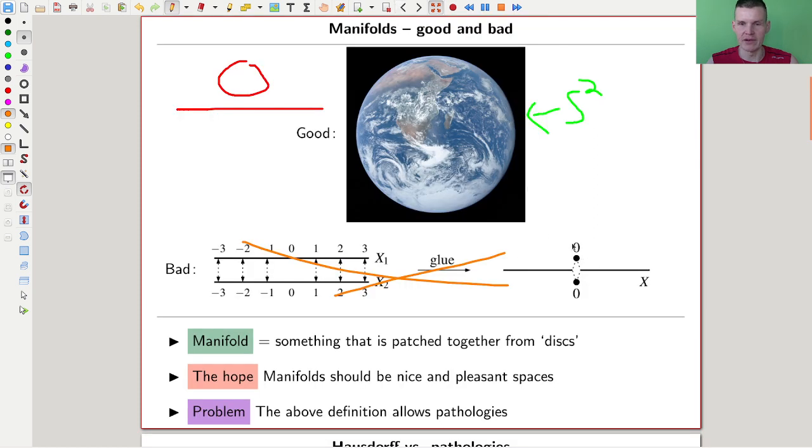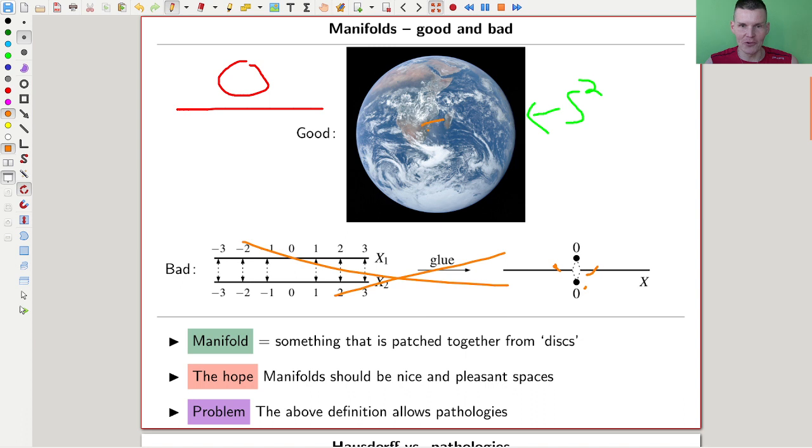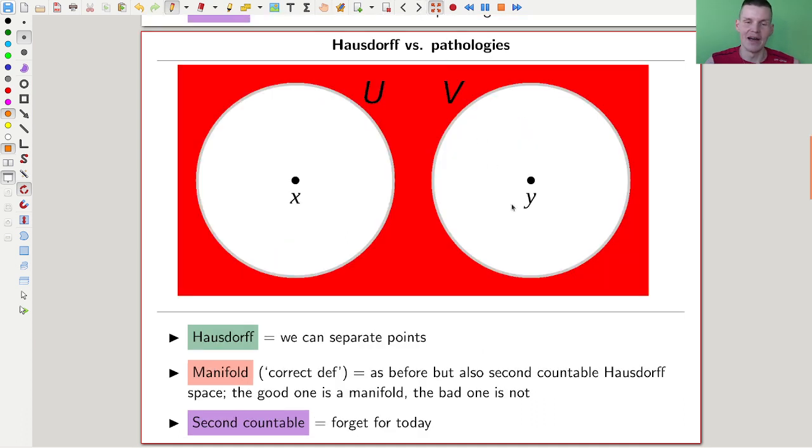You can draw a little disk around one point, and a little disk around the other point, and the two disks are disjoint. This is the Hausdorff property. And you just can't do that here. You draw a little disk around zero, it will always contain some points down here, or maybe you want to call it zero prime if you want. So you can't separate those two points. It's not a Hausdorff space.